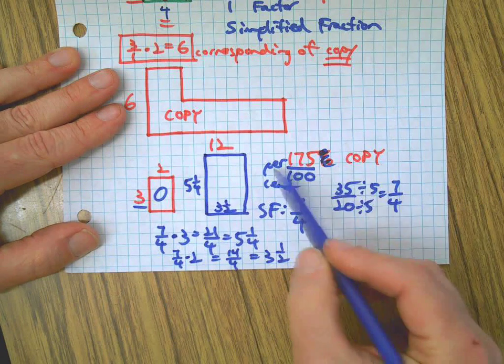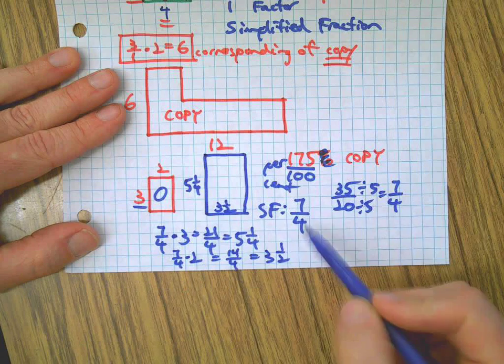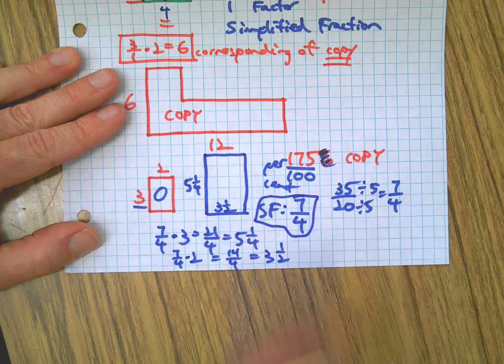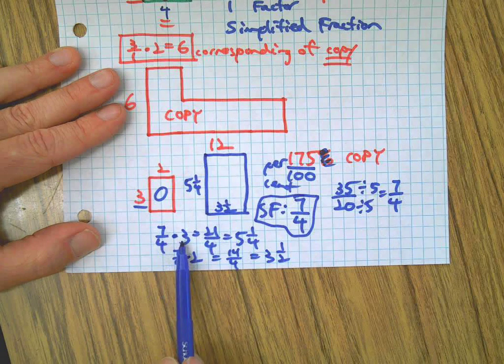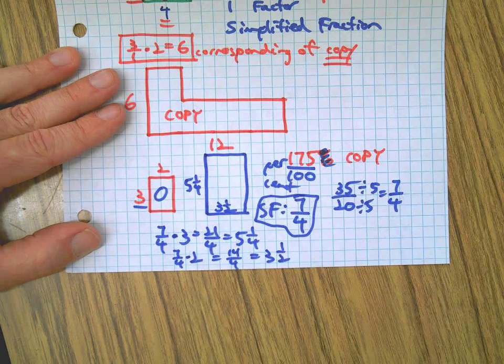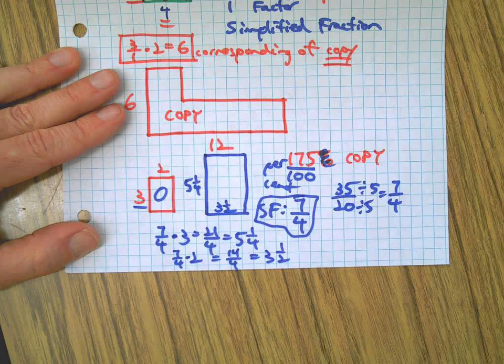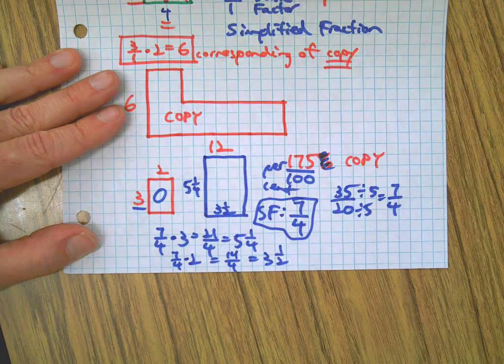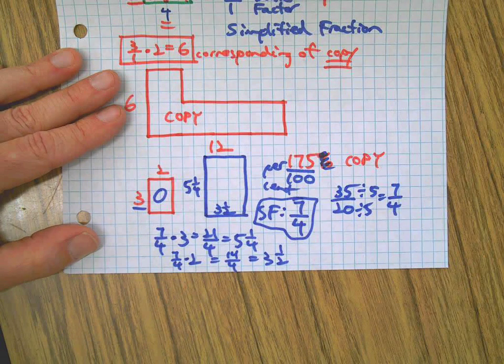Okay, so any percentage you make, just change it to a fraction, simplify the fraction, and no matter how scary it may look, you just go back to scale factor times a side of the original equals that corresponding side of the copy. Easy stuff. Thanks for watching, and I'll see you on the next one. Take it easy.